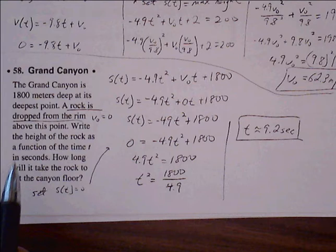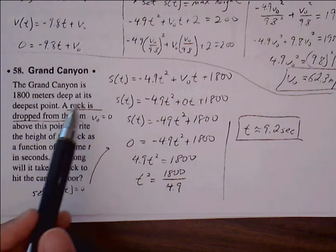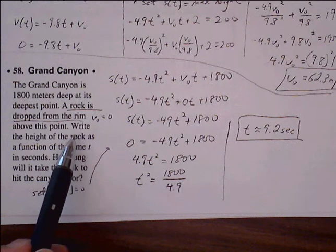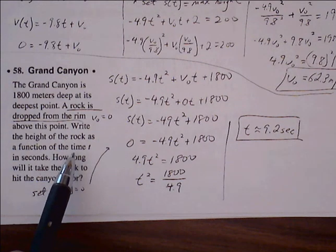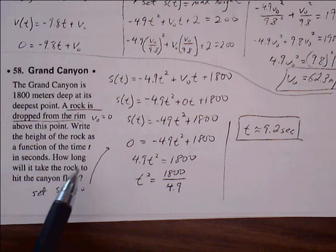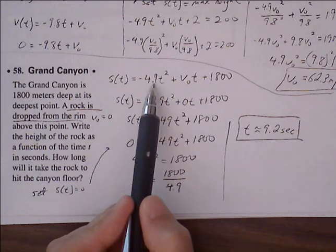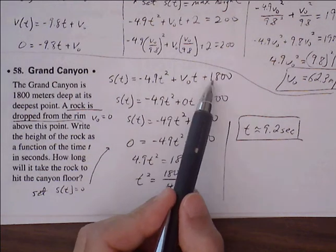Problem 58: The Grand Canyon is 1,800 meters deep at its deepest point. A rock is dropped from the rim above this point. Write the height of the rock as a function of t in seconds. How long will it take for the rock to hit the canyon floor? Here's our starting position: -4.9t² plus v₀t plus 1,800.